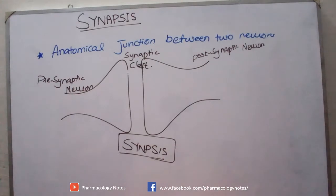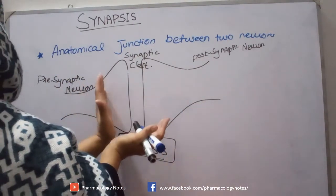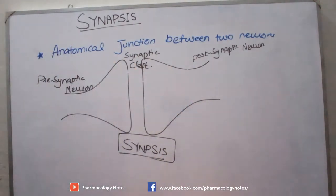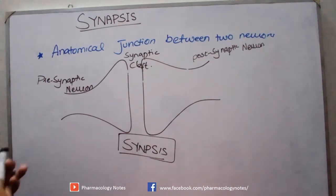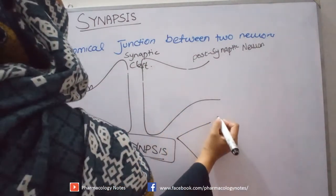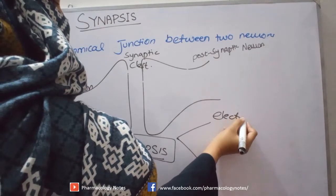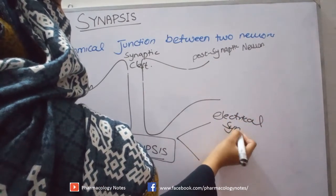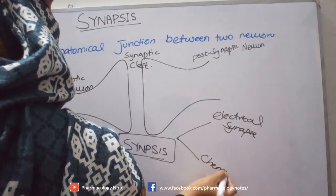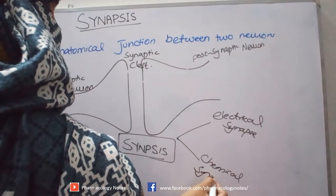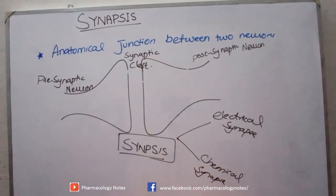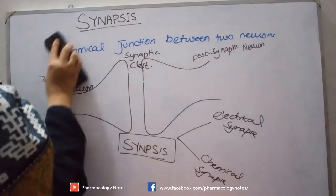There are multiple types of synapses. Among this anatomical junction, the communication between the presynaptic neuron and the post-synaptic neuron could happen through chemicals or through electrical signals. So we can classify synapses into two types: electrical synapse and chemical synapse.